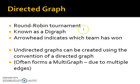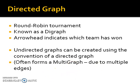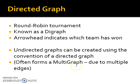This could be for a round robin tournament in terms of what team has won. Undirected graphs can be created using the convention of a directed graph. What you actually do is have it as a multigraph. You have arrows going two ways. So if you wanted to use directed graph to represent an undirected edge, we have an arrow going one way and the arrow coming back the other. It's called a multigraph because there are multiple edges connecting vertices.